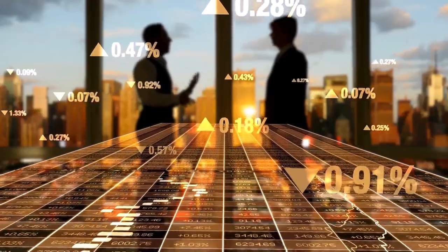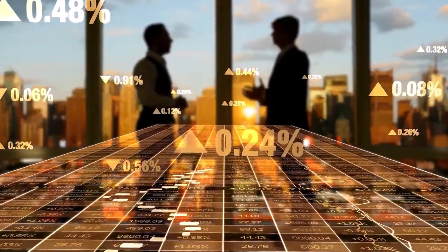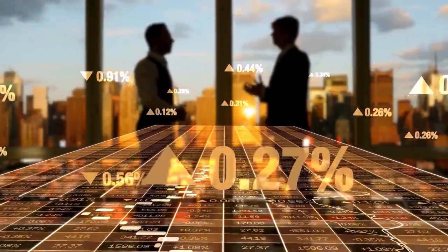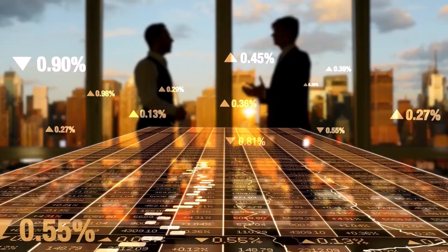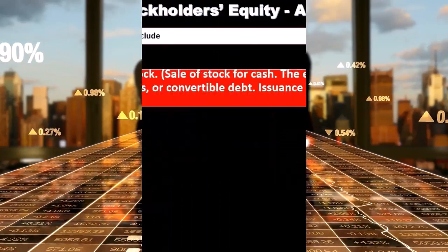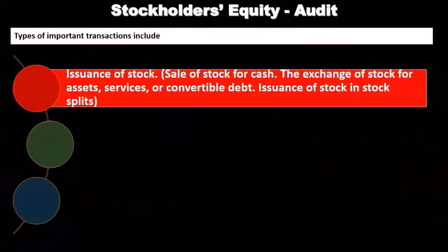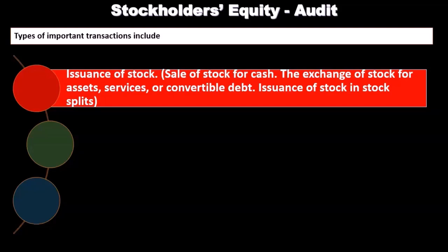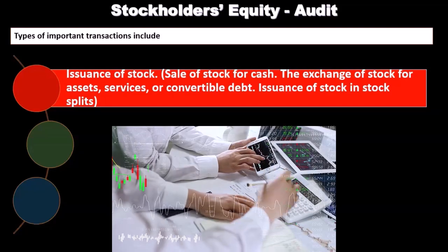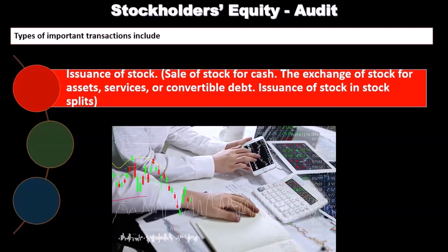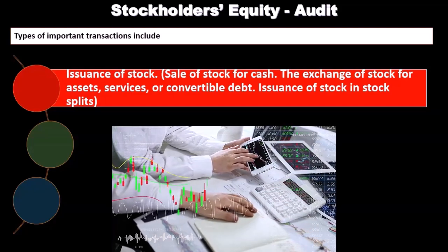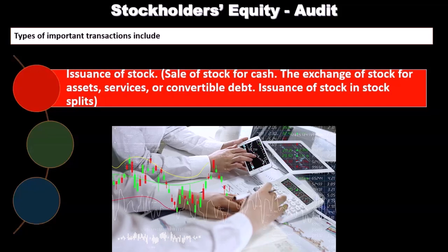If we're talking about a publicly traded company, it may be the case that new stock will be issued, but it's probably not a lot of transactions compared to other types of areas within the financial statement. So we would expect the issuance of stock to not have a whole lot of transactions.